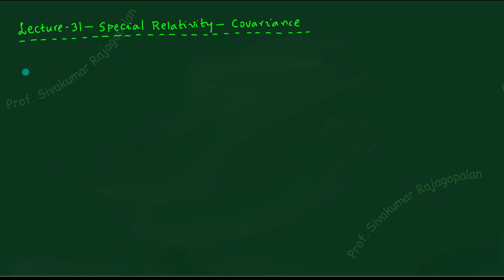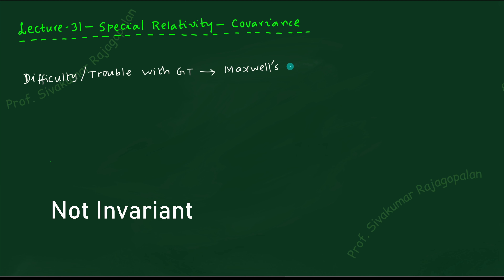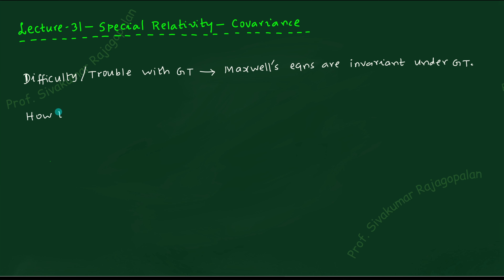When a higher-dimensional mathematical entity remains invariant, we say it is covariant. So covariance is a generic term when we use tensor and index notation instead of the traditional arrow for vectors. In summary, covariance is synonymous with the invariant property. Now let us discuss what are the possible ways to proceed. Let me write down what is the difficulty with the Galilean transformation: Maxwell's equations are not invariant under the Galilean transformation.